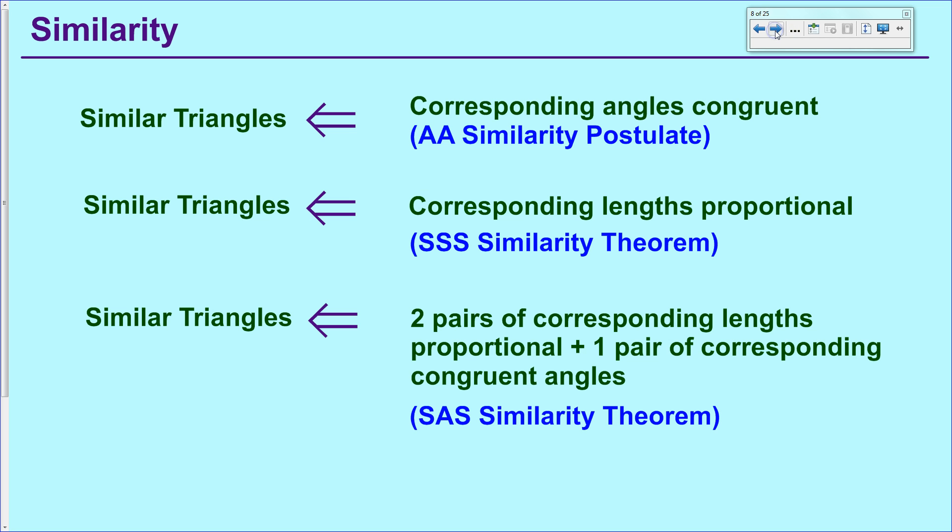The second similarity theorem we're going to talk about is called the SAS similarity theorem. And the SAS similarity theorem is fairly complicated in what you need to show, the conditions that you need in order to use the theorem. The SAS similarity theorem, kind of like the AA similarity theorem, says that you only need two pairs rather than three pairs of corresponding lengths. But in addition to those two corresponding pairs that are proportional,